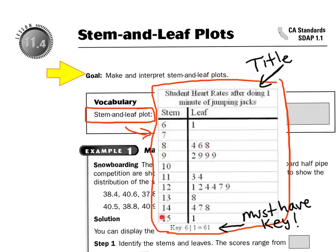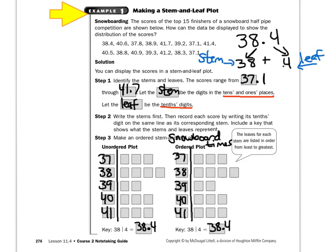Down here, something like 15 bar 1 would be a heart rate of 151. So I'm just giving you an introduction. Remember, stem and leaf plots also must have a title. Now let's do an example together.